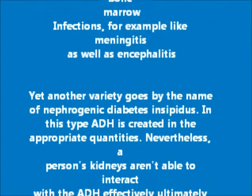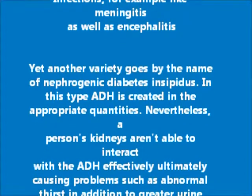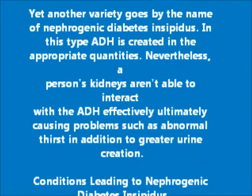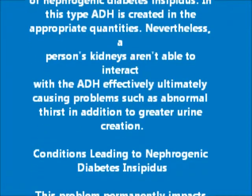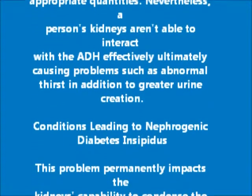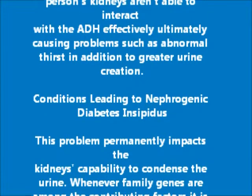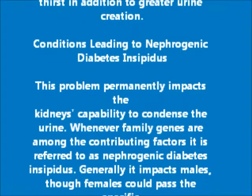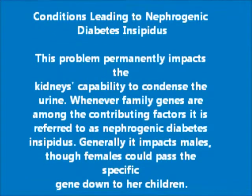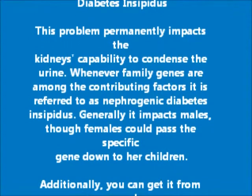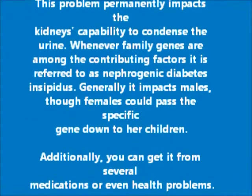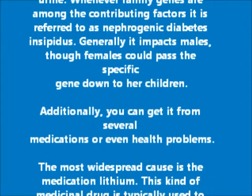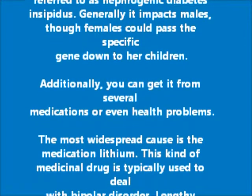Another variety goes by the name of nephrogenic diabetes insipidus. In this type, ADH is created in the appropriate quantities, but a person's kidneys aren't able to interact with the ADH effectively, ultimately causing problems such as abnormal thirst and greater urine creation. When family genes are among the contributing factors, it generally impacts males, though females could pass the specific gene down to their children.